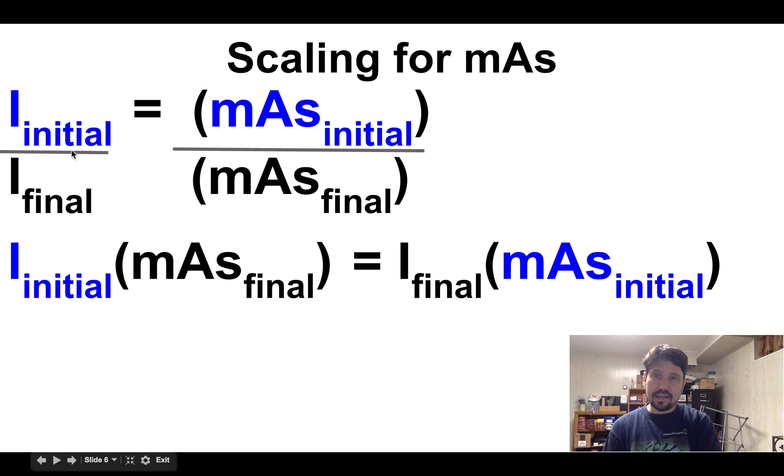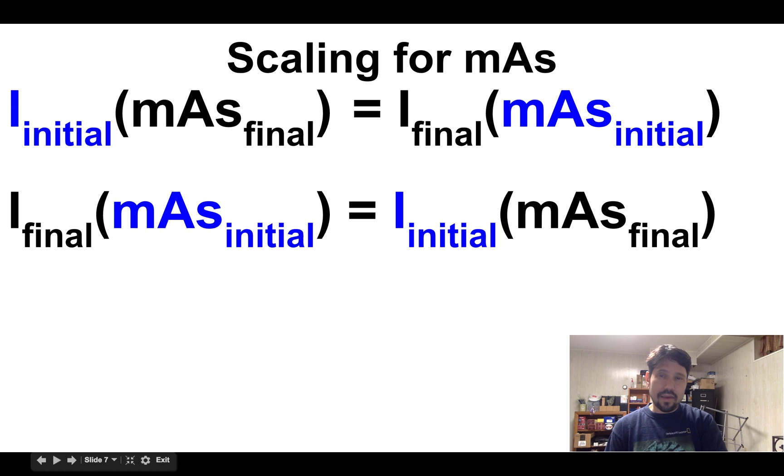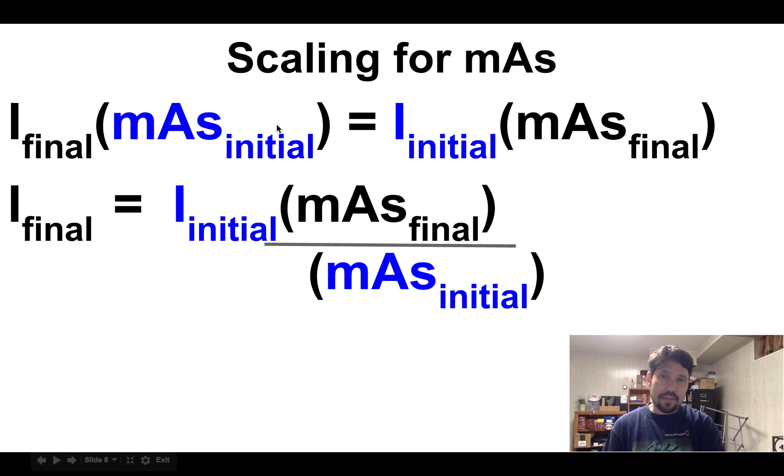So intensity initial times mAs final equals intensity final times mAs initial. And then I can go ahead and change the order and set it intensity initial times mAs final I'll put over here, intensity final times mAs initial I'll put over here. I just reordered the equation, I just flipped it. And then I can divide by mAs final, so I have intensity final equals the initial intensity times the ratio of the mAs.